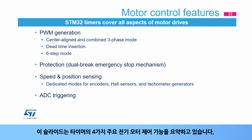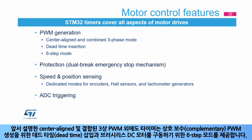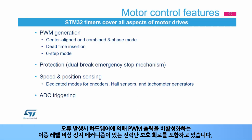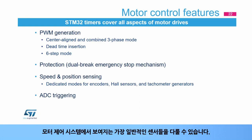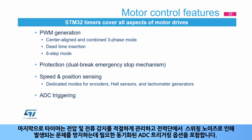This slide summarizes the timer's four main electrical motor control features. The timer includes specific PWM modes for controlling power switches, including center-aligned and combined three-phase PWMs, dead-time insertion for complementary PWM generation, and six-step mode for driving brushless DC motors. It includes power stage protection with a dual-level emergency stop mechanism. It handles the most common sensors: quadrature encoders and Hall sensors for fine and coarse position feedback, and tachometer generators for speed feedback using clear on-capture mode. Lastly, the timer includes synchronized ADC triggering options to manage voltage and current sensing properly.